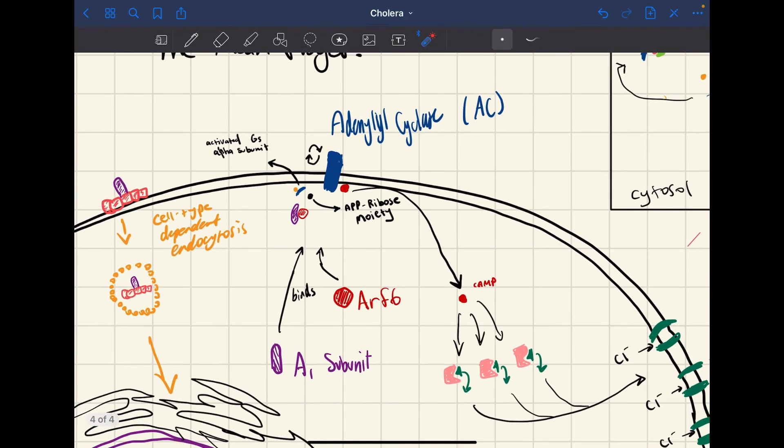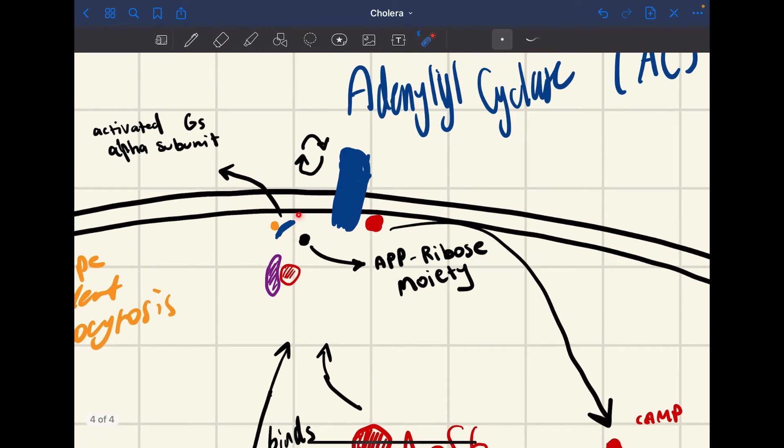And then here, you have your alpha subunit going to your cell. And then it binds with ARF6. So this is ADP ribosylation factor 6. We didn't talk about it too much during the lecture, but this is basically a human enzyme that facilitates the role of adding that actual ADP ribose. So the alpha subunit, the alpha 1 subunit binds with this. It goes to adenyl cyclase, where you have the activated GS alpha subunit, and it's GTP. And it ribosylates this. So this causes constant activity.